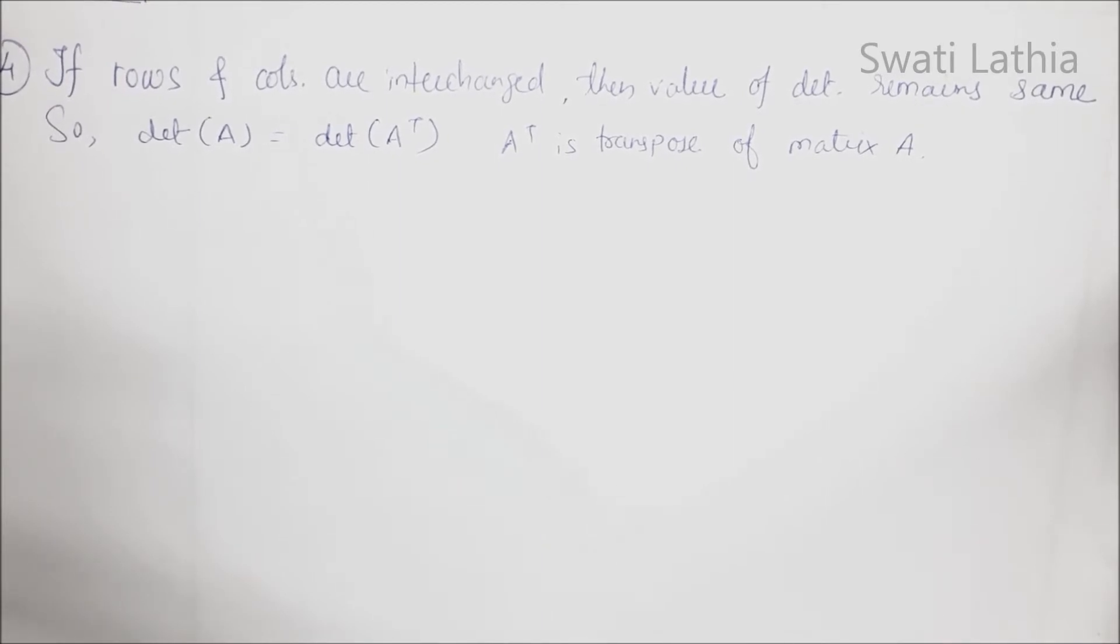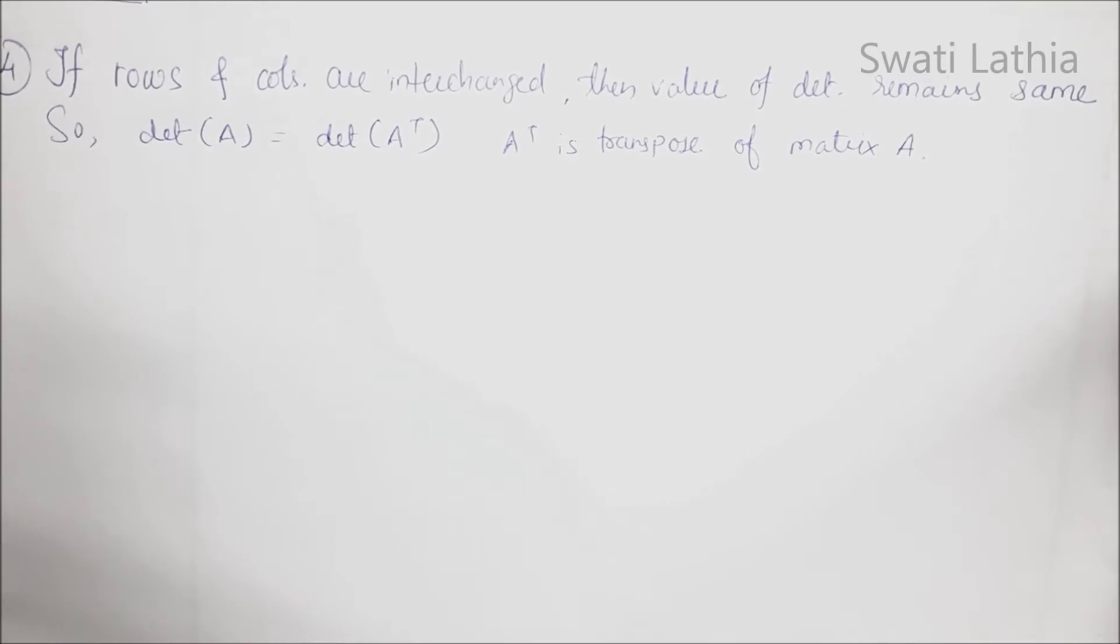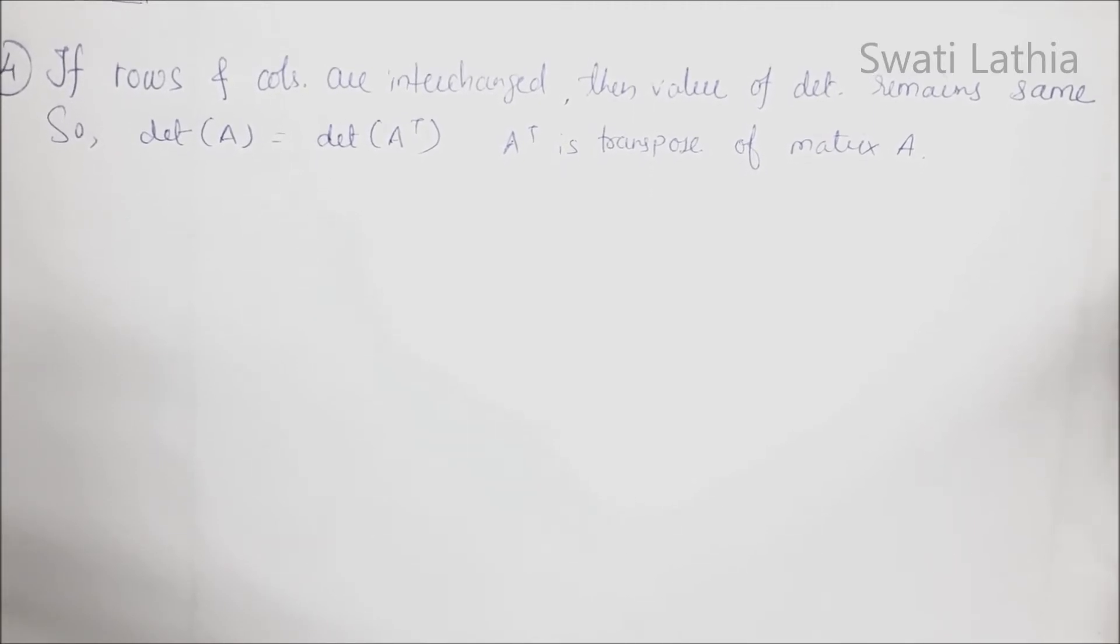એટલે કે જો Determinant ની rows ને column ને row ને જેને બને નું છે Determinant ની value છે એ એ કચચર ખી આવે, આને Transposition કહે છે, Transpose of Matrix. તો બને નું છે Determinant ની value છે એ એ કચચર ખી આવે. Transposition પેલા અને Transposition બછી બને વ�ગ�ે Determinant છે એ સે�રે છે.